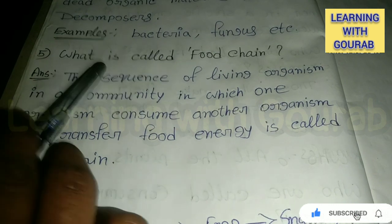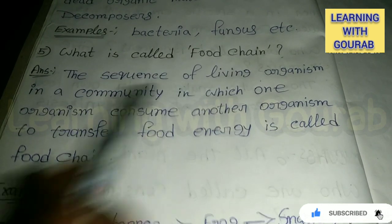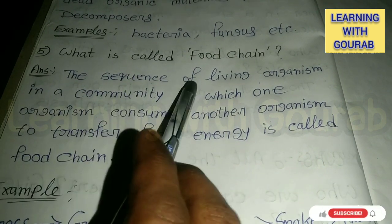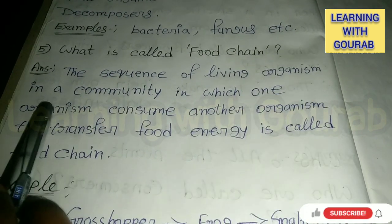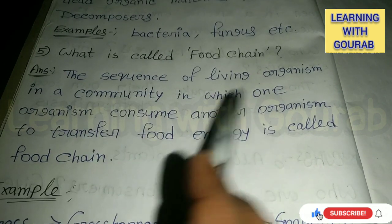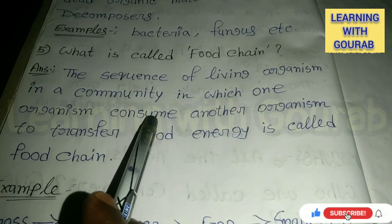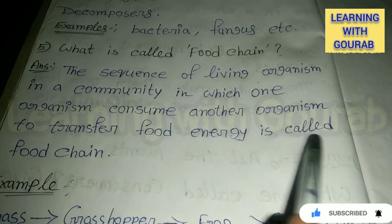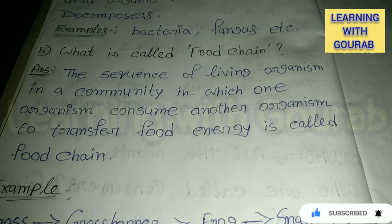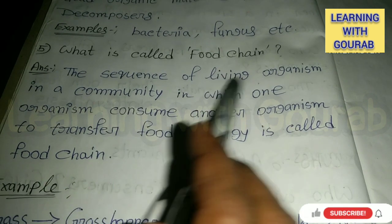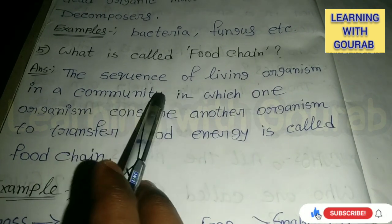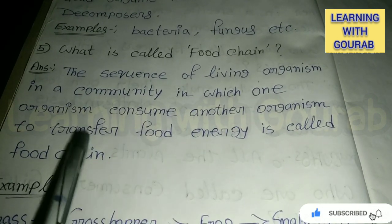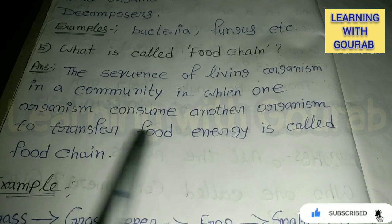Next question: What is called a food chain? Answer: The sequence of living organisms in a community in which one organism consumes another organism to transfer food energy is called a food chain. Remember, when living organisms are arranged in a sequence and one organism consumes another to transfer food energy among them, that is called a food chain.